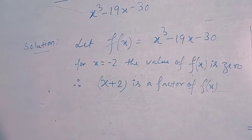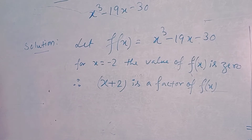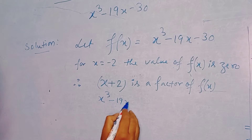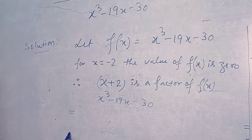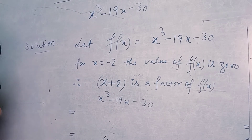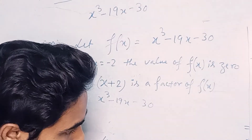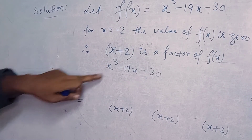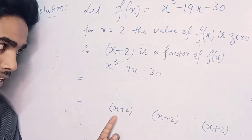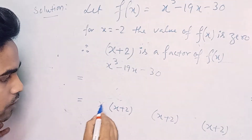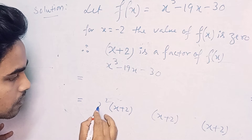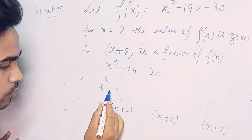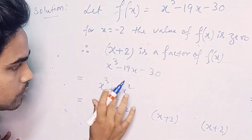Now, what you have to do is write x plus 2 three times on the second line. The first term is x cubed, so what should be multiplied with x to make x cubed? It is x squared. So we write x squared here — x squared into x gives x cubed. Then x squared into 2 gives 2x squared.